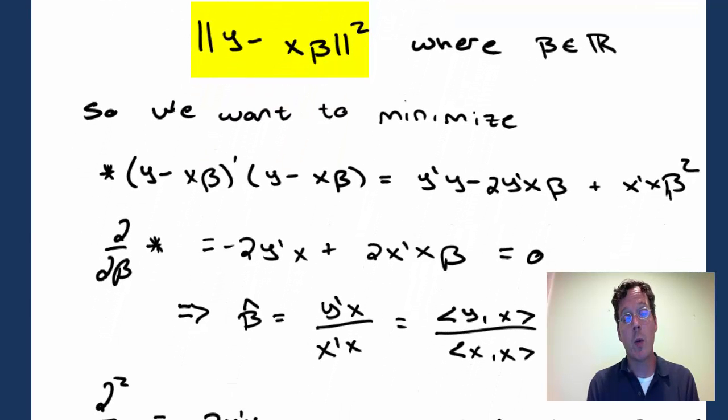If we expand this square, we get y transpose y minus 2y transpose x beta plus x transpose x beta squared.